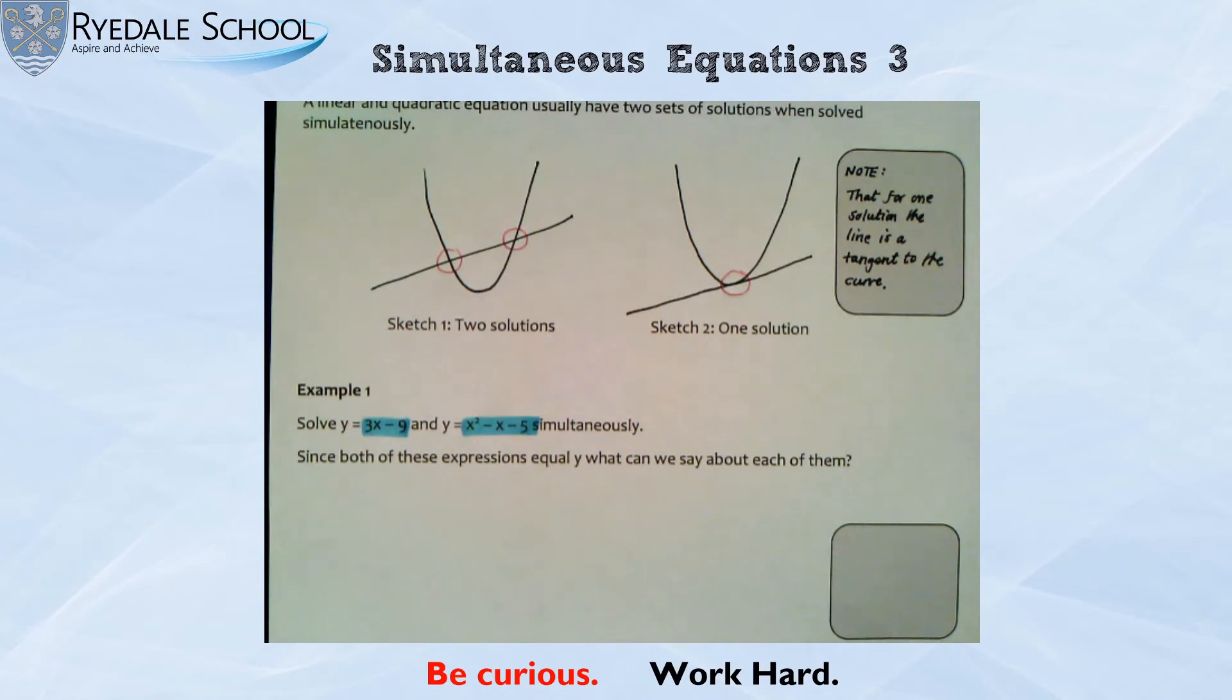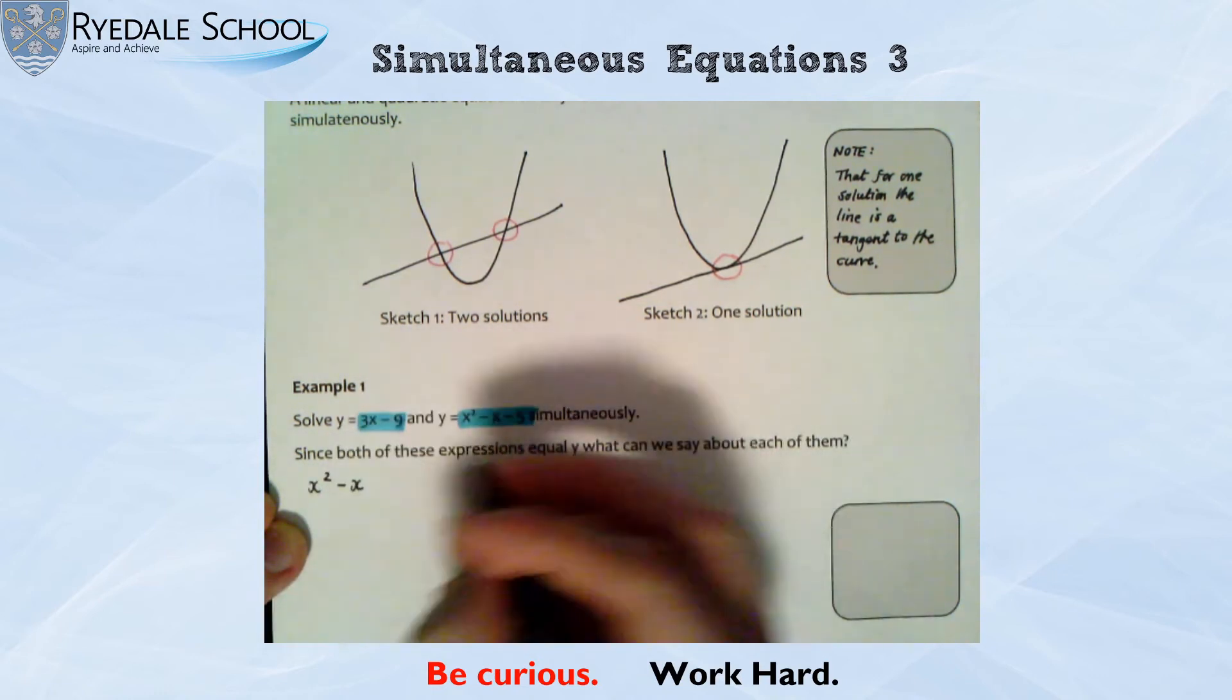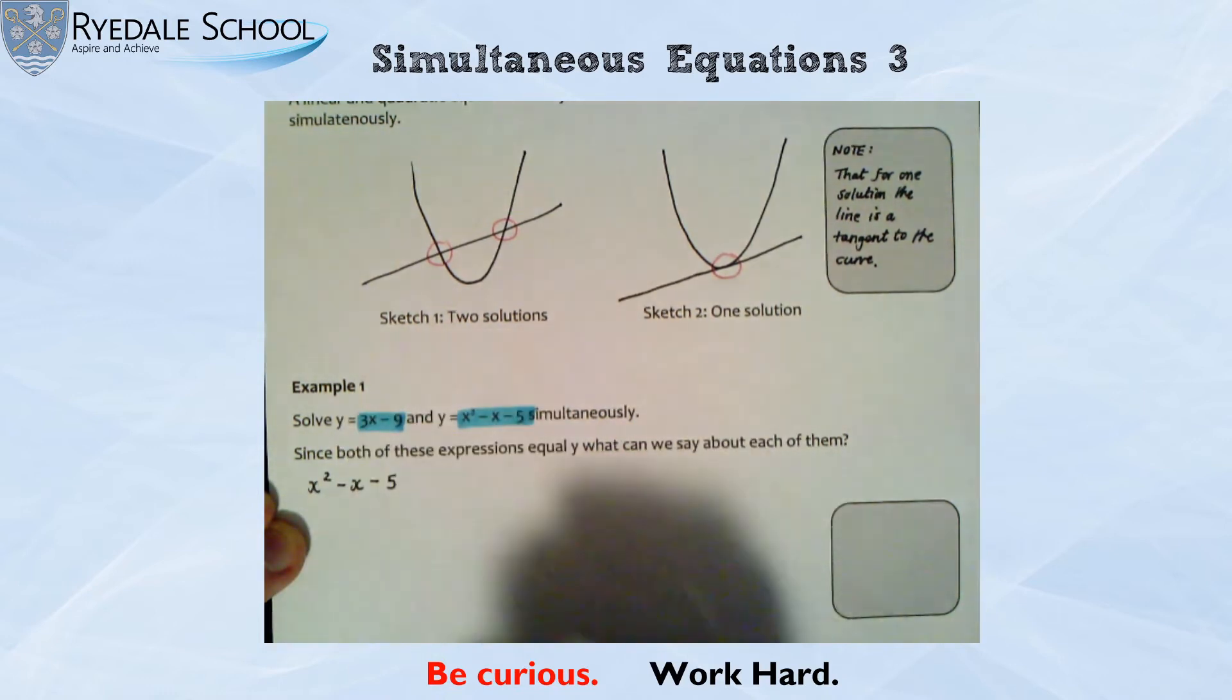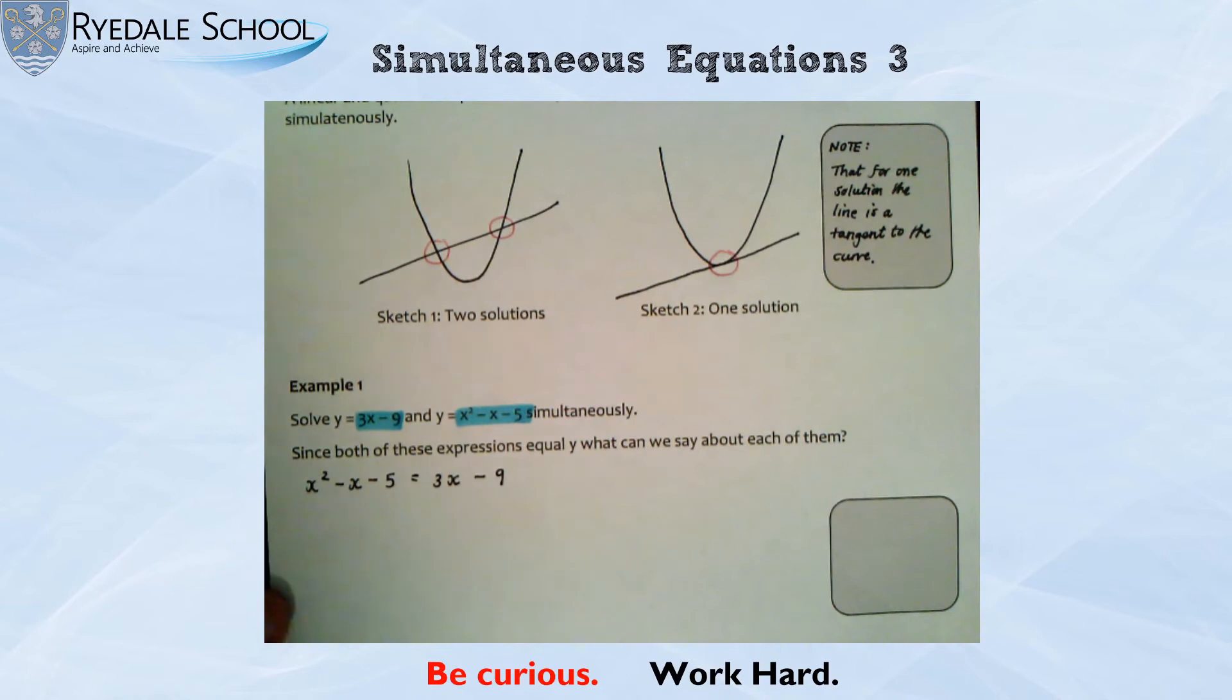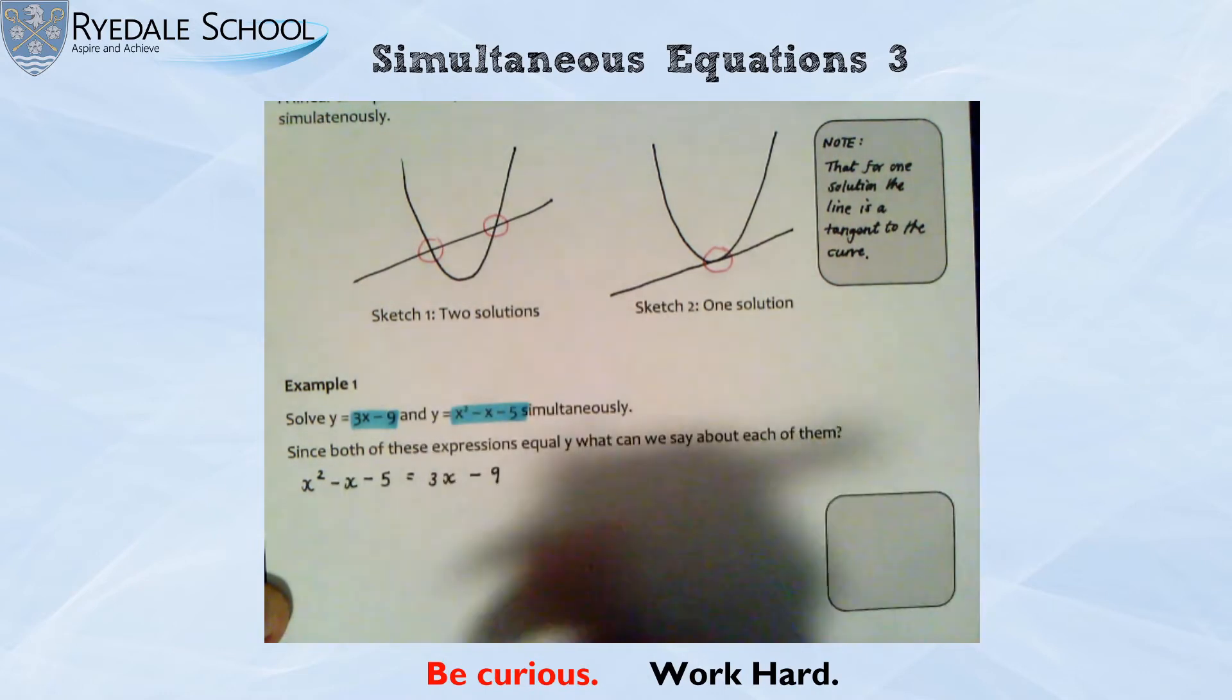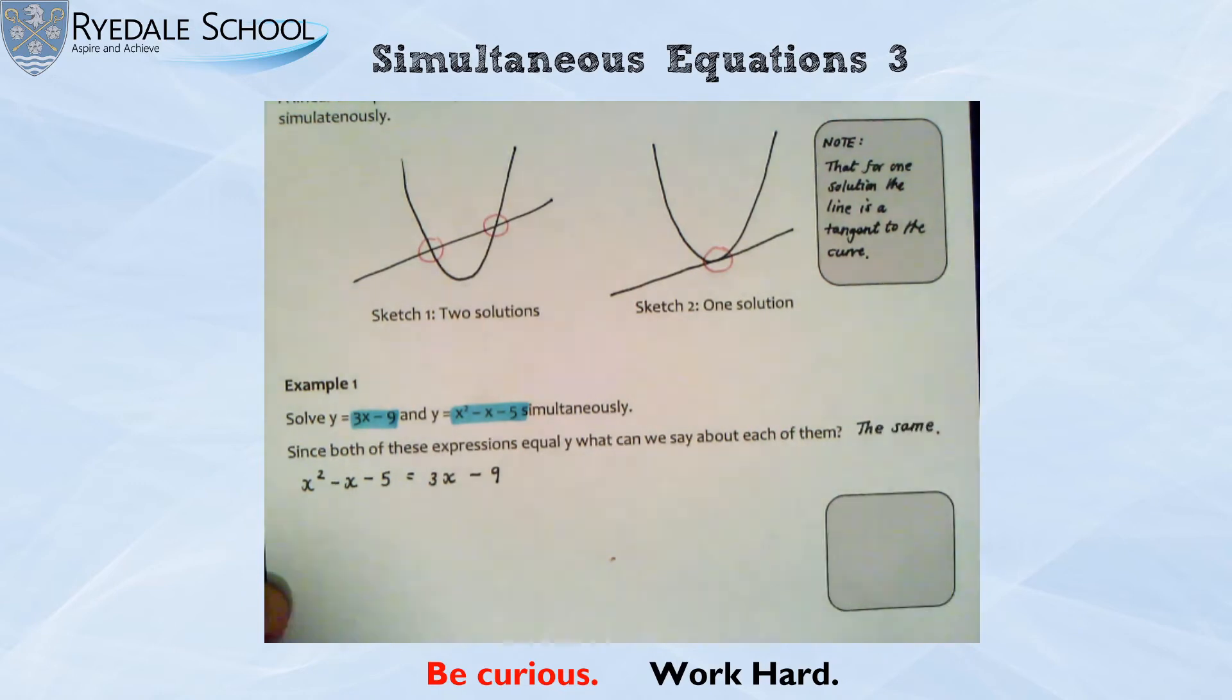So I'm going to write that out. So I'm going to say this one x squared take away x minus 5 must equal 3x take away 9. And that's what that expression equating them means. I have put these two things equal to each other. So I'm just going to put here, since both of these equal y, what can we say about them? They are the same. They are equal to each other.